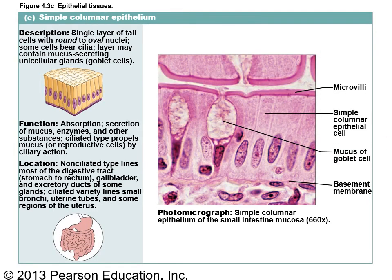Simple columnar epithelium lines the GI tract. It has microvilli — little finger-like projections that increase surface area to maximize absorption. You'll also see goblet cells embedded within these passageways, which are mucus-producing cells. These goblet cells produce the mucus that allows easier passage of food substances and residue through the GI tract.